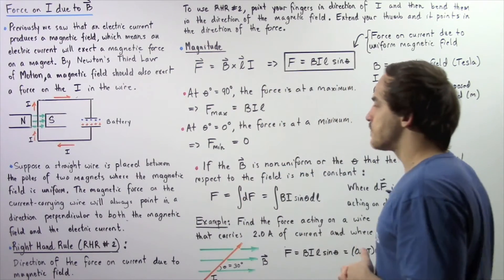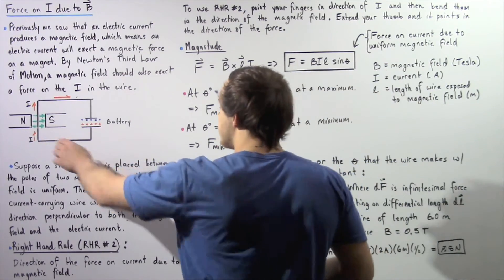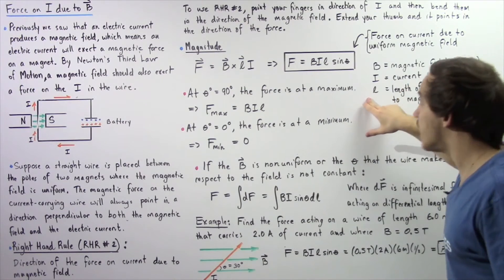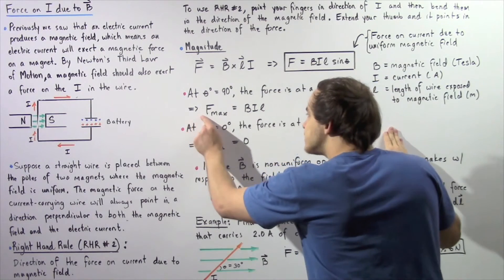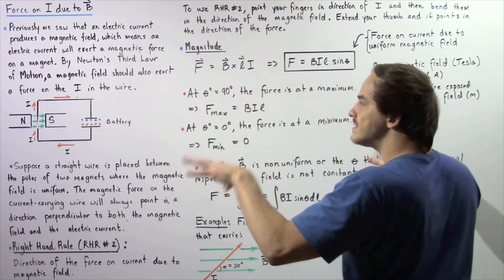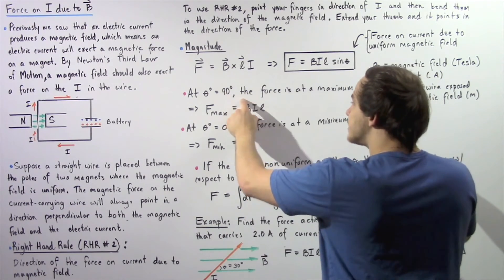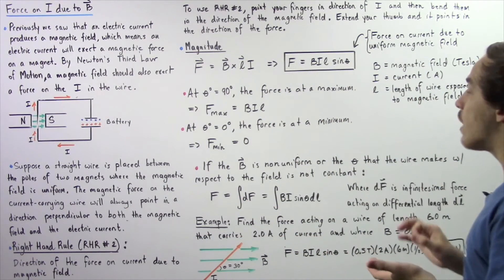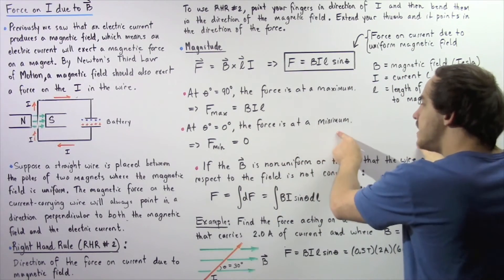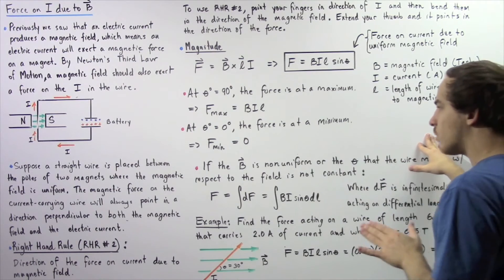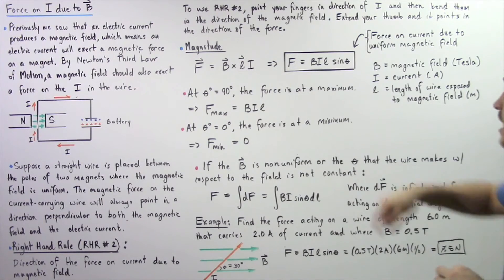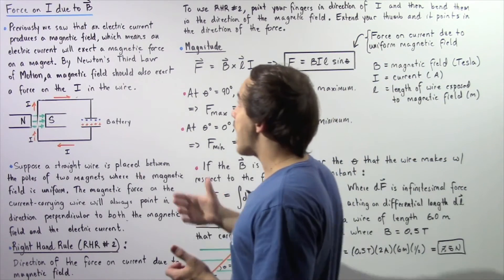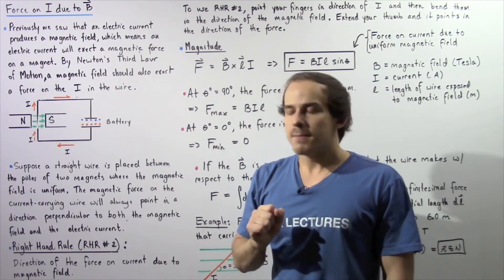Now notice the following two important points. At an angle of 90 degrees between our magnetic field and our electric current, the force is at a maximum because the sine of 90 degrees equals 1. So the maximum force is given by B multiplied by I multiplied by L. At the same time, if the angle between our magnetic field and our length L is 0 degrees, the force is at a minimum because sine of 0 is equal to 0 — so the minimum force is 0 Newtons. The force is given in Newtons.